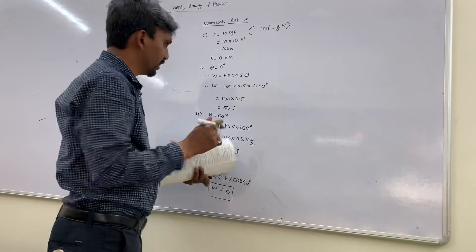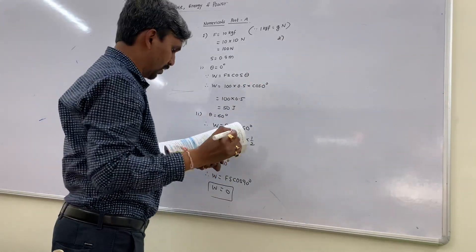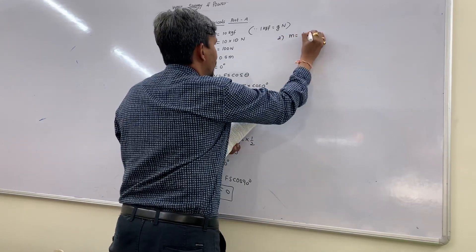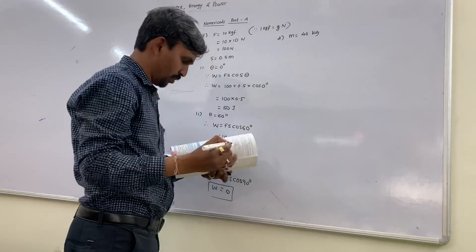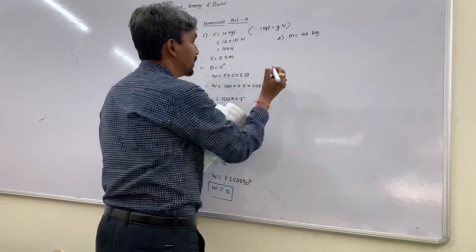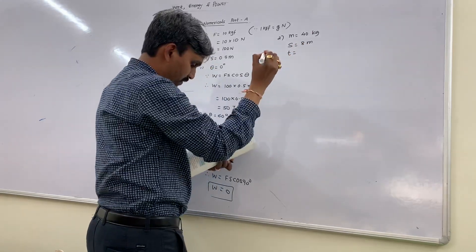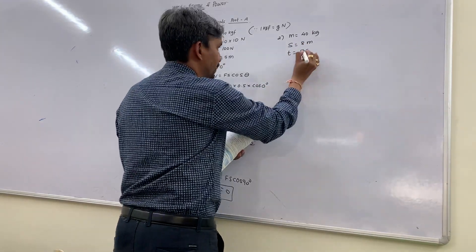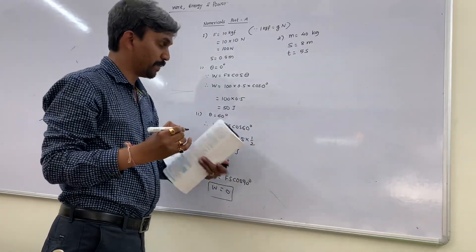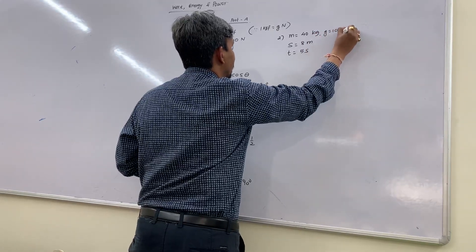Second numerical: a boy of mass 40 kg climbs up the stairs and reaches a height — displacement is 8 meters — in a time of 5 seconds. They want the force of gravity, work done, and power. G value is given as 10 m/s².